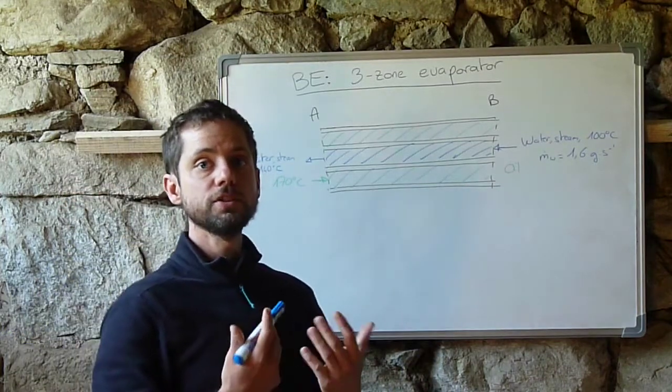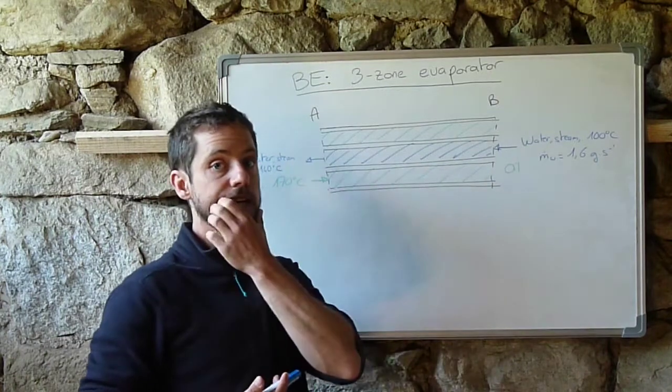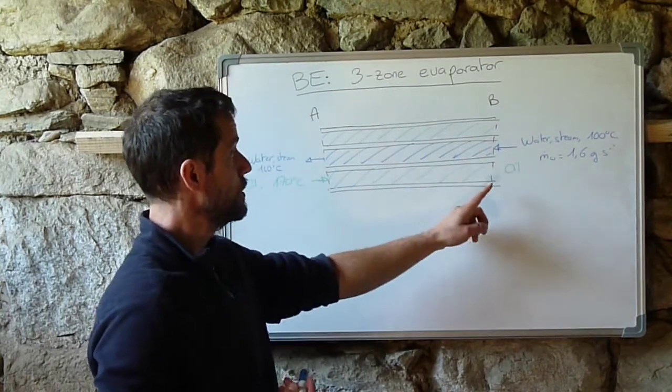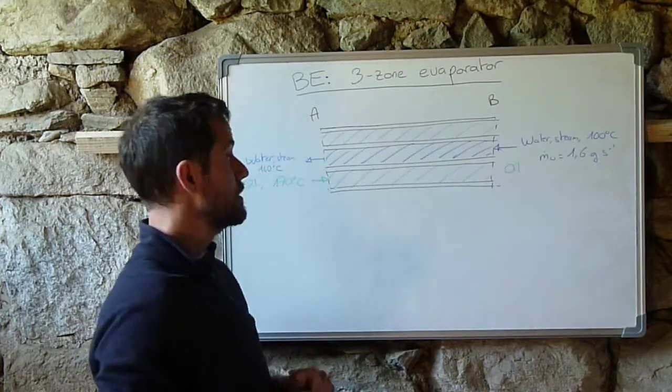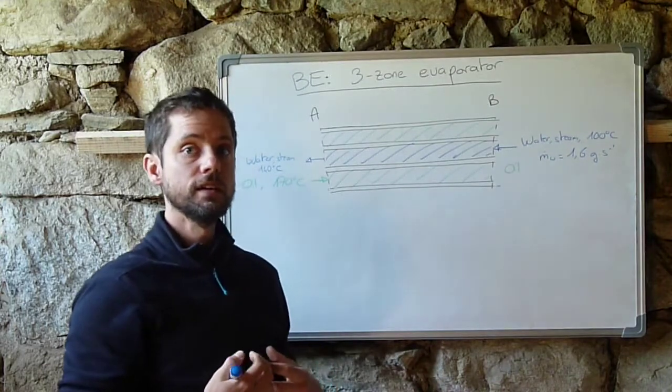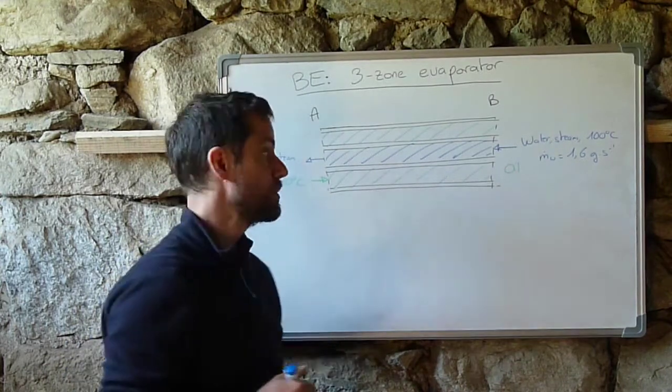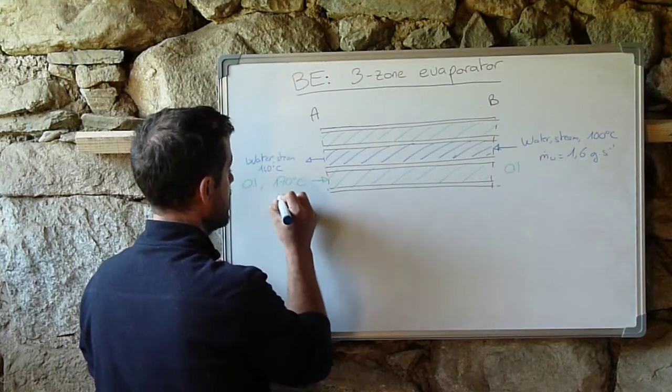So first thing you do, you calculate how much heat is exchanged between the fluids in this section, and it's not complicated to do it with the heat balance on the water side because you know the inlet and outside temperature as well as the mass flow rate and the properties of the steam. So you calculate here the heat exchanger.